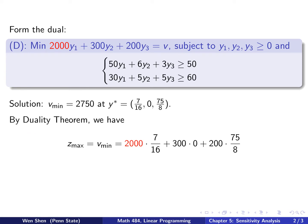By the duality theorem, Z_max equals V_min. V_min is the minimum value of the dual objective evaluated at the optimal point Y*. So that is computed as 2000 times Y1 (which is 7/16), plus 300 times Y2 (which is 0), plus 200 times Y3 (which is 75/8). So Z_max is computed in this way, and we see that the 2000 — the aluminum price — appears right here.